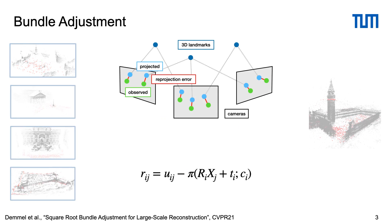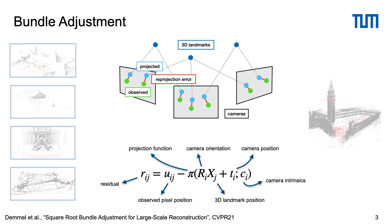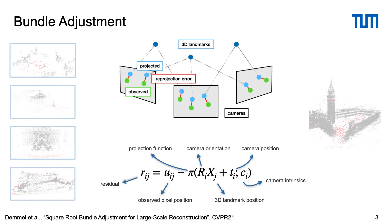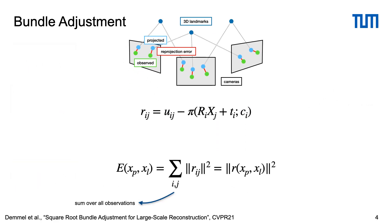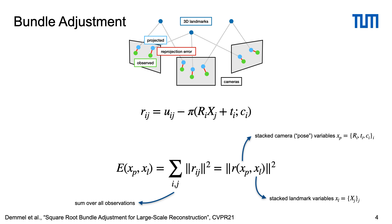Given an initialization, bundle adjustment jointly refines camera poses and 3D landmark positions by minimizing the reprojection error — that is, the difference in pixels between the observed and the reprojected feature position. We sum the squared reprojection errors over all observations, which we write more compactly with stacked pose and landmark variables xp and xl.